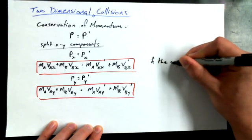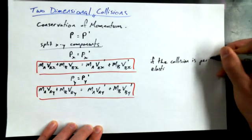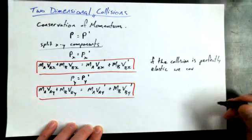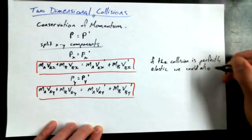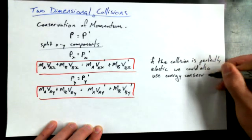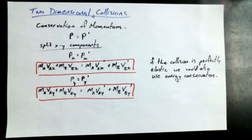I should make a note. If the collision is elastic or I could say perfectly elastic, we could also use energy conservation. And if I wanted to use energy conservation, what would the energy conservation equation look like? Would it look any different than in just the X component? Or in just one-dimensional? Think about it. Is kinetic energy a scalar or a vector? A scalar. So does the direction even matter? No. Does it matter that it's two dimensions? No.